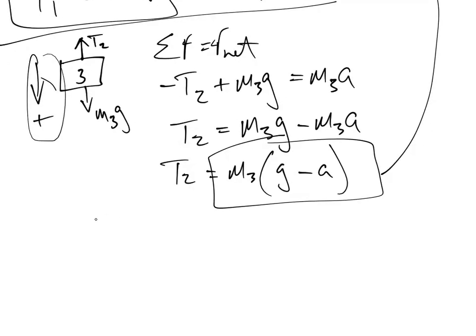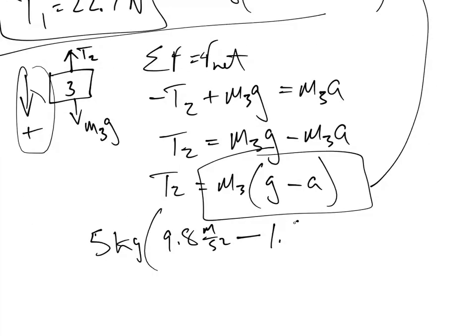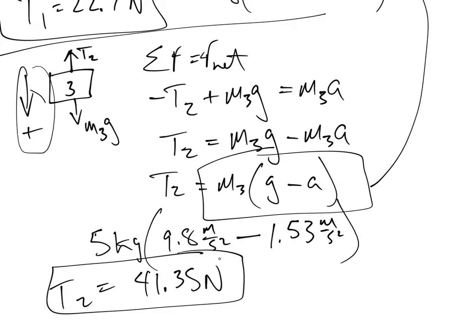So, let's work it out. M3 was 5 and 9.8 minus acceleration of 1.53. And what do we get for the answer for T2? Let's try that out. 9.8 enter 1.53 minus 5 times. Answer, 41.35. You can round that a bit if you like. But that's the end of the problem. I hope you enjoyed it. See you later.